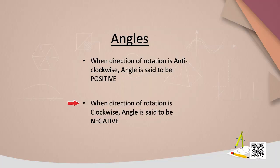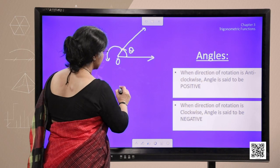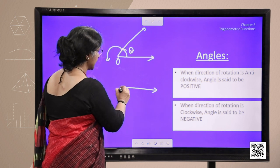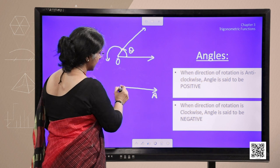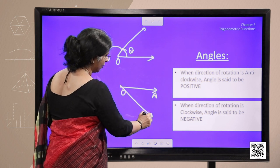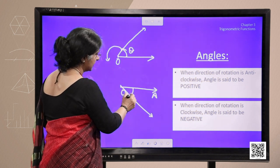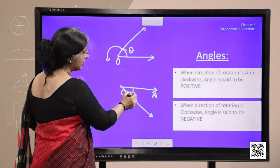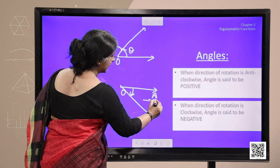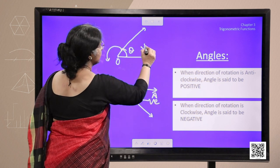Now when direction of rotation is clockwise, this is vertex, this is our initial ray and this terminal ray is moving clockwise. As the minute or second hands of clock move clockwise, the angle traced is negative angle and this is positive angle.